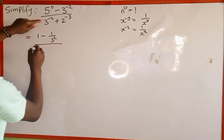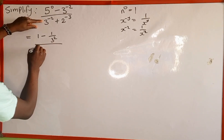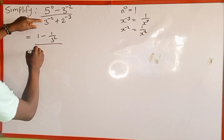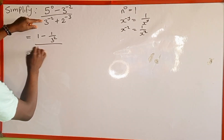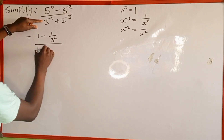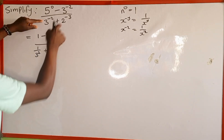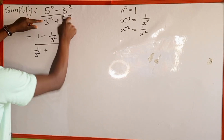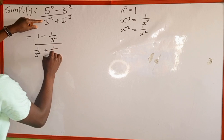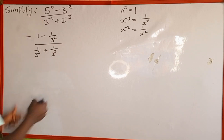So we can write 3 to the power of negative 2 as 1 all over 3 to the power of 2. Then everything all over: we also write 3 to the power of negative 2 as 1 all over 3 to the power of 2, plus 2 to the power of negative 3 as 1 all over 2 raised to the power of 3.